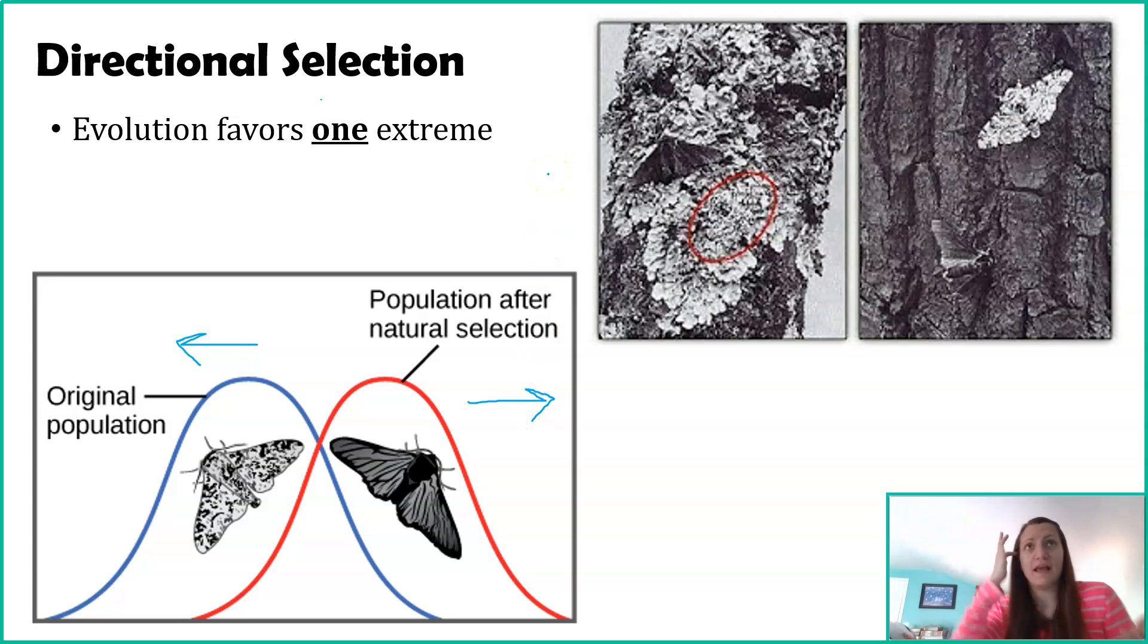This example is showing directional selection in both directions. Cheetah evolution of how fast they are would be an example of directional towards faster cheetahs. I'm thinking about mice getting smaller. Maybe evolution is favoring that because smaller mice are able to get into more crevices so they have more access to food. The point is evolution is favoring one extreme at a time. With peppered moths, there was an instance where white was being favored and another instance where black was being favored, but at a particular time, only one was being favored.